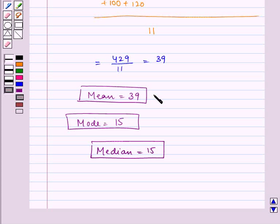Therefore, we can see that mean equals 39, mode equals 15, and median equals 15, which is our required answer. But they are not all the same. So no, they are not same.